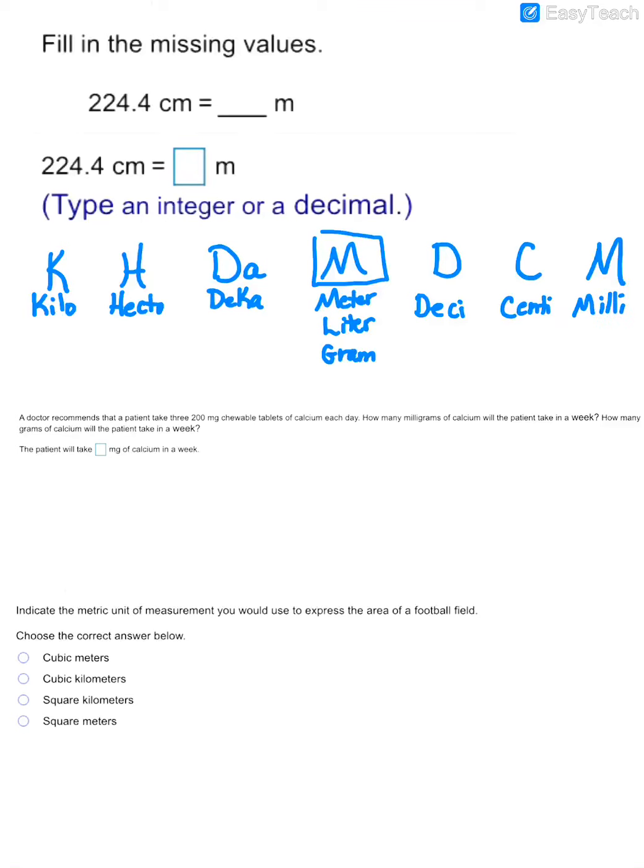So in this particular example, we are being asked to go from centimeters, which would be here, to meters, which would be here. And so if you count how far and which direction you are moving, that tells you how to move your decimal. My original number was 224.4, and I noticed that to go from centi to meters, I went 2 to the left.